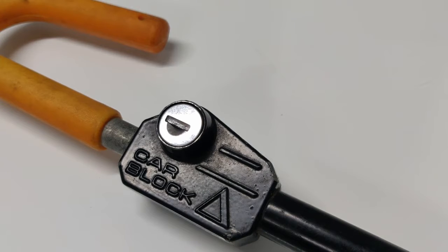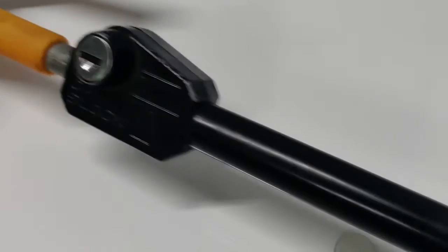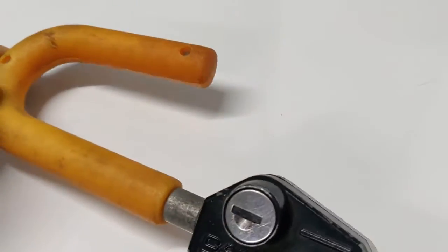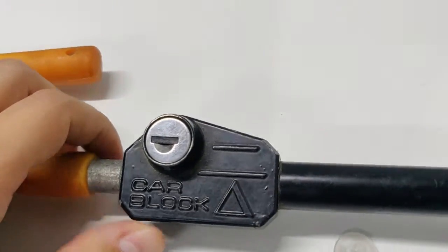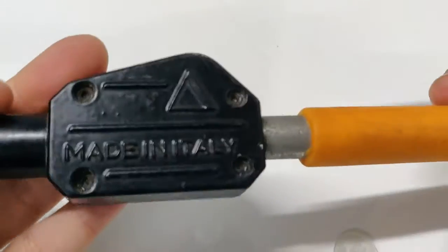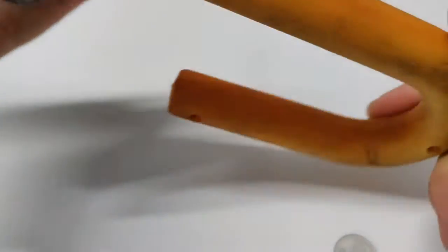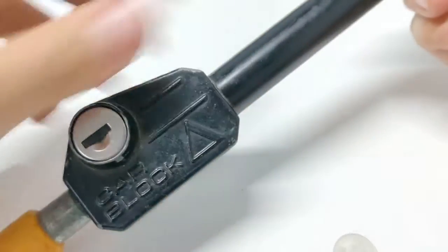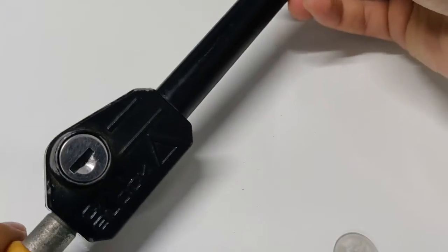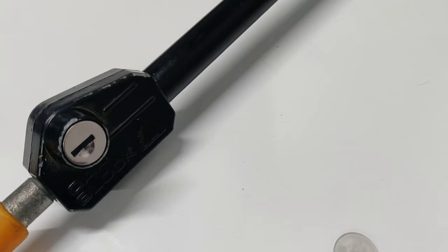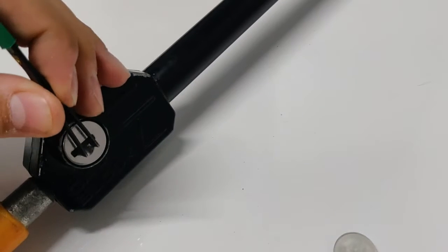Hi, today I have a car block lock for you guys. It's a lock for locking your steering wheel and brakes, so if someone opens your car they cannot drive it. It's a pretty heavy lock, made in Italy, but it's a wafer lock and pretty awful in my opinion—wafers without false gate, pretty easy to pick.